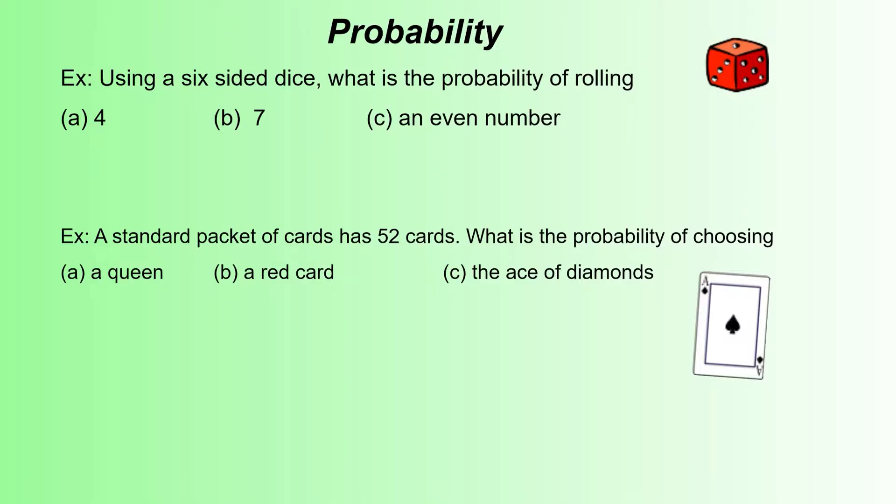Let's have a look at a few more examples. We've got first of all dice and then cards, very typical examples you'll probably see in maths. Using a six-sided dice, what is the probability of rolling a 4? Should actually be a six-sided die, but most people are more familiar with the word dice, so we'll keep it at dice.